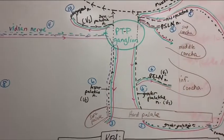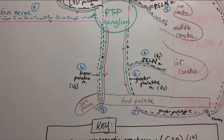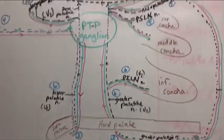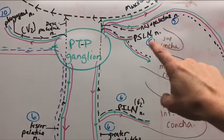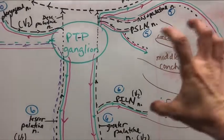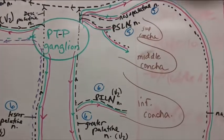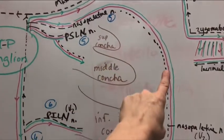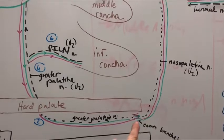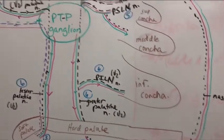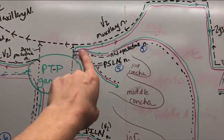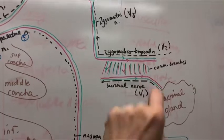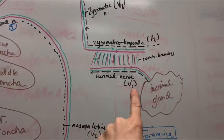Postganglionic sympathetics travel on the lesser palatine nerve to shut down parasympathetic drive to the mucosa on the soft palate. They also travel via the greater palatine nerve to the mucosa on the hard palate. To shut down nasal congestion, we take the posterior superior lateral nasal and posterior inferior lateral nasal to shut down mucosa production at the conchae and their meatuses. The nasal palatine nerve covers the nasal septum mucosa, and fibers intermingle with greater palatine at the incisive foramen at the anterior edge of the hard palate. Postganglionic sympathetics also jump onto the maxillary nerve, going to the infraorbital nerve, which gives off the zygomatic nerve, then zygomatic temporal nerve, and via communicating branches jump onto the lacrimal nerve to stop lacrimation at the lacrimal gland.